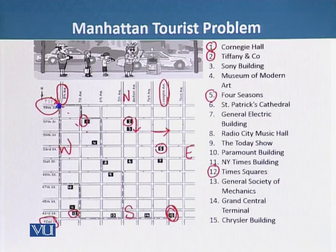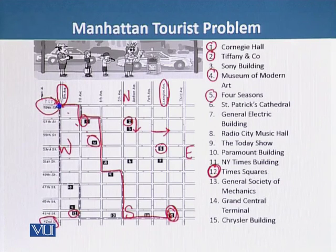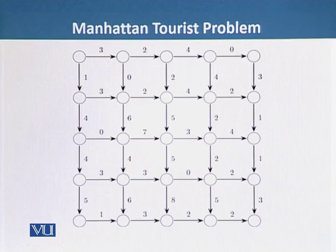The first path is the upper path starting from the northwest corner and going down. Using this path, the tourist visits the Museum of Modern Arts at number 4, but misses Times Square at number 12 because the path moves in a different direction. If the tourist uses the lower path instead, they can see Times Square but will miss the Museum of Modern Arts.